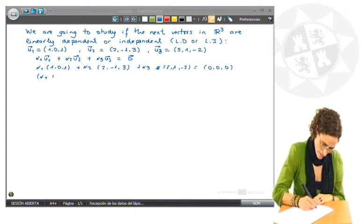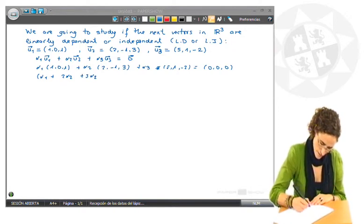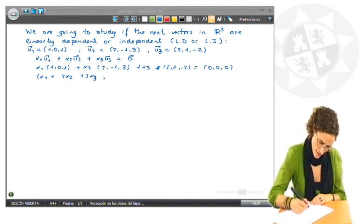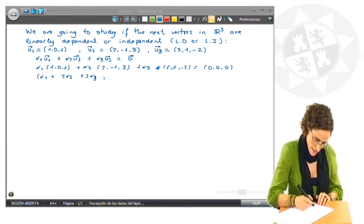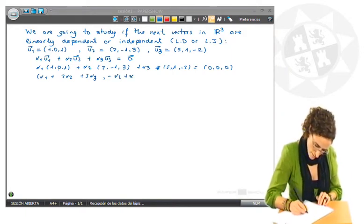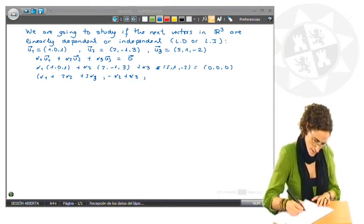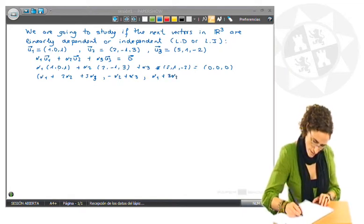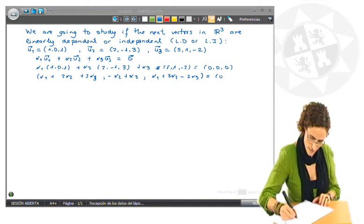α1 plus 2α2 plus 5α3. The second component is 0 by α1 minus 1 by α2 and α3. And the third component is α1 plus 3α2 minus 2α3. And this has to be equal the null vector.